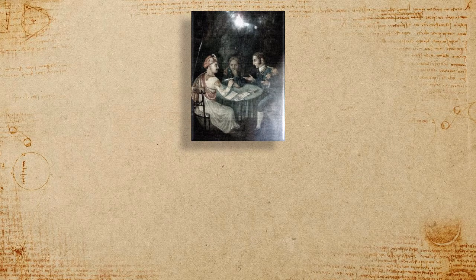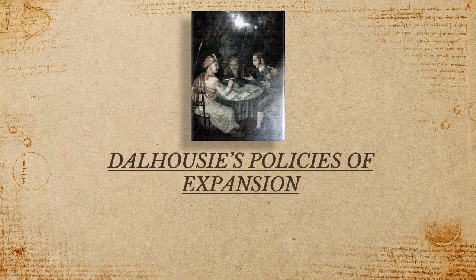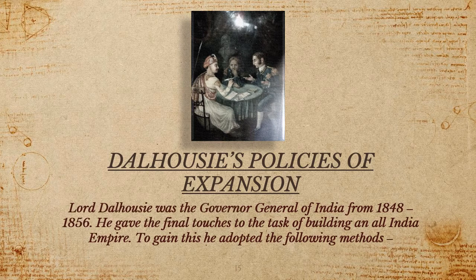Now we will move further and discuss the policies of expansion under Lord Dalhousie. Lord Dalhousie, the Governor General of India from 1848 to 1856, adopted a number of methods to give the final touches to the work of empire building in India. The methods he adopted were the Doctrine of Lapse — by which he captured Satara, Jhansi, and Nagpur — and annexation on the grounds of maladministration, for example Awadh.